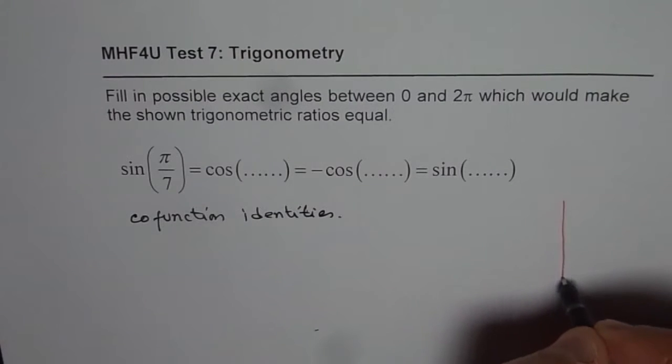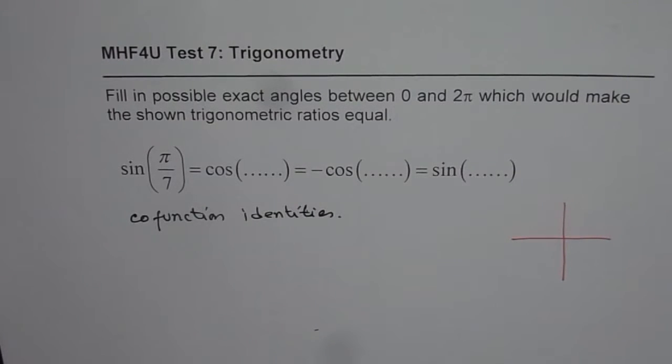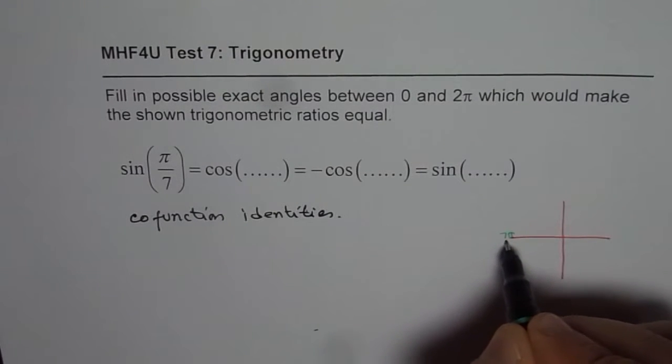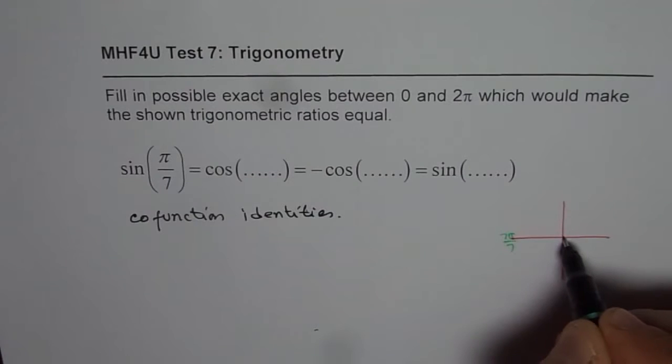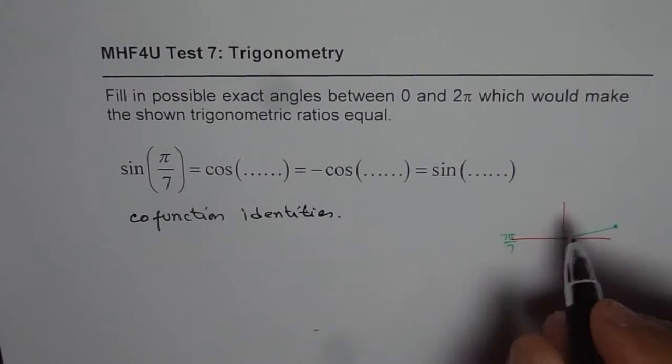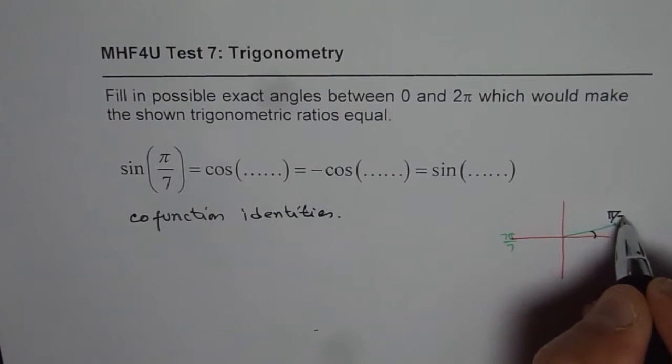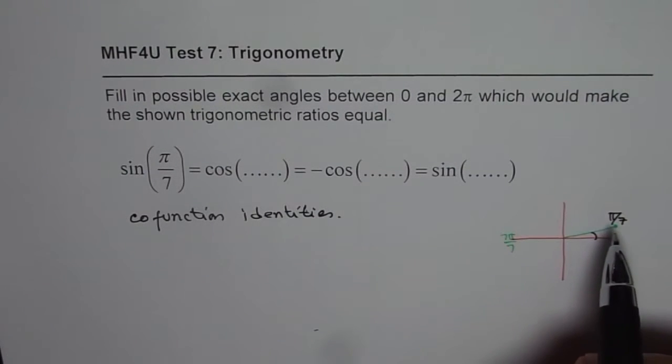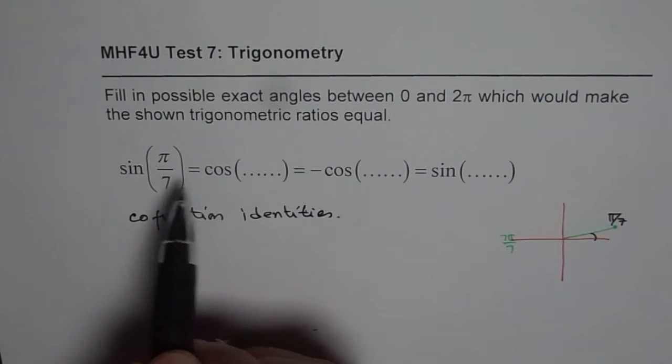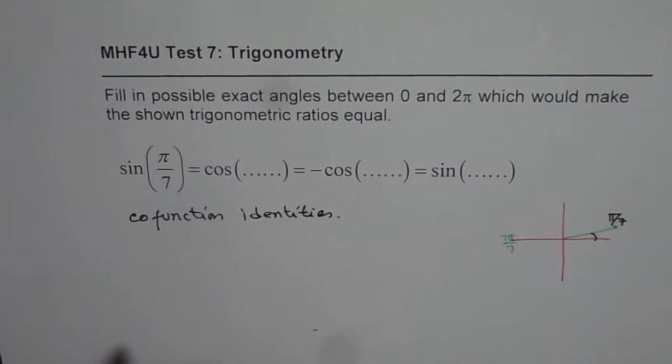Now, one way to do it is to think about the coordinate plane. We have sin(π/7), that means this is 7π/7 which is divided and we have this angle, which is sin(π/7). So there we have π/7. Now we need to find the co-terminal angles. Now, how could we do it? Now this is a co-function identity. So to write sin in terms of cos, what should we do?